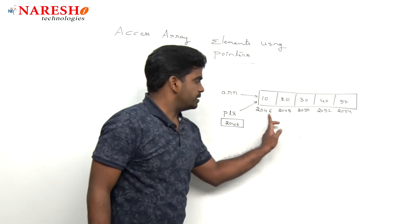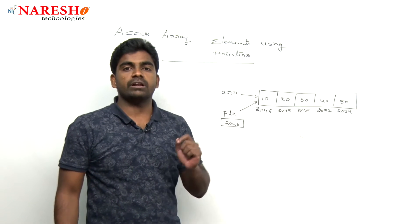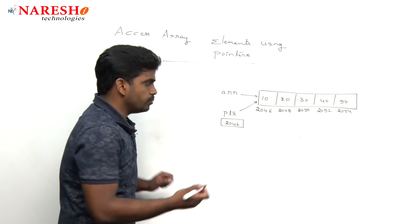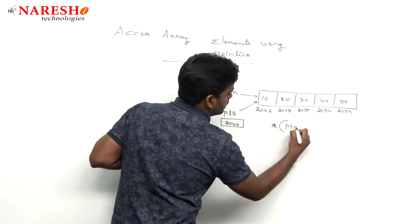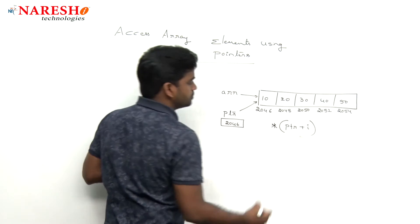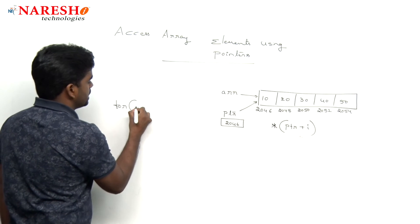So we are accessing with the help of addresses, nothing but we use pointer modify concept. Here pointer PTR plus i, where i value starts with 0.